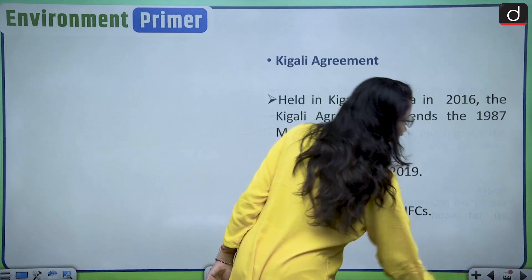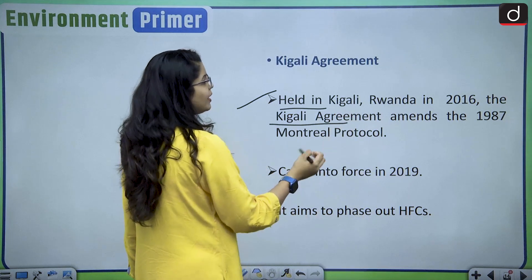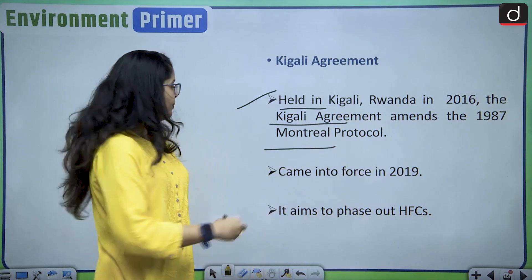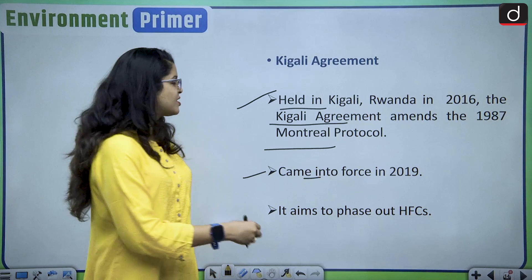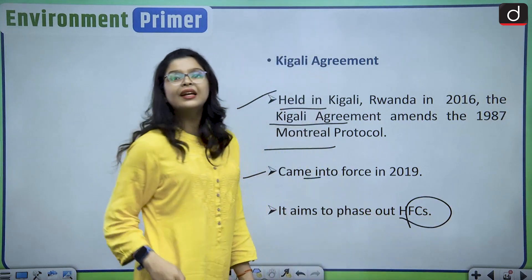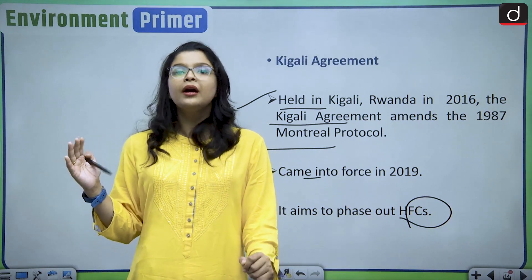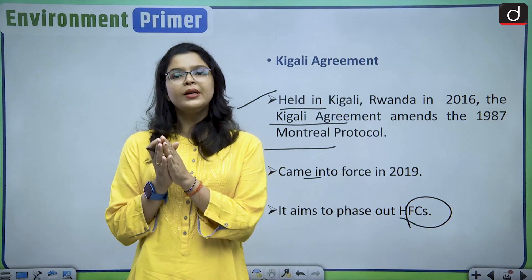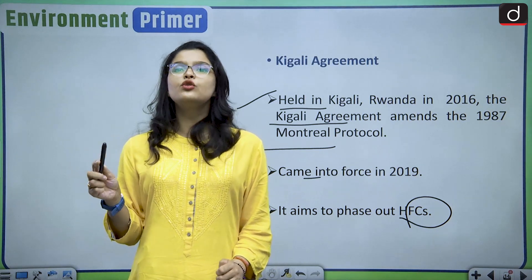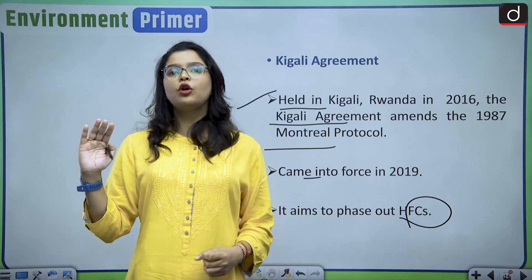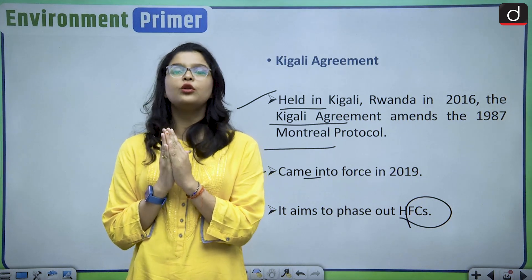Then came the Kigali Agreement of 2016, held in Kigali, Rwanda. The Kigali Agreement amends the 1987 Montreal Protocol and came into force in 2019. Its main aim is to phase out HFCs, which are currently one of the major threats to the ozone layer. So the Kigali Agreement aims to phase out these HFCs in order to protect the ozone layer.